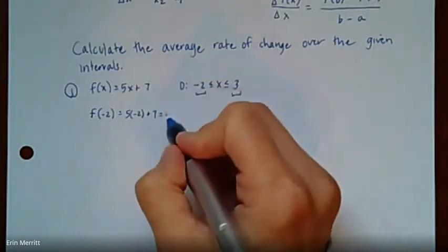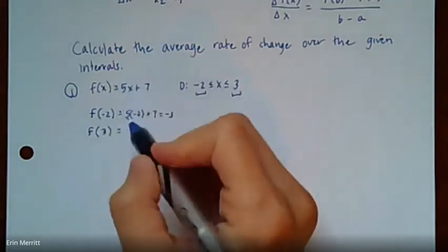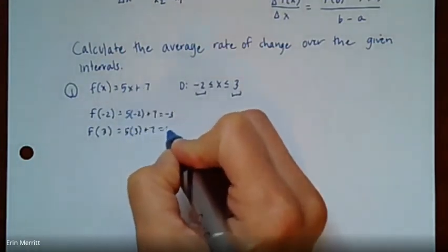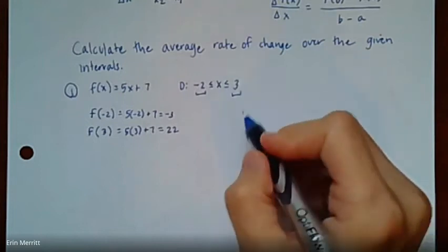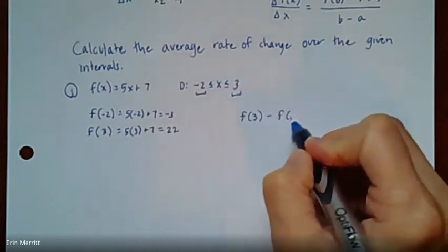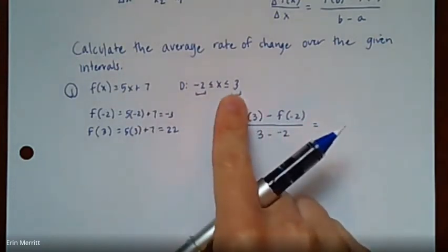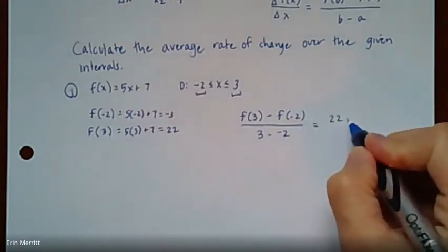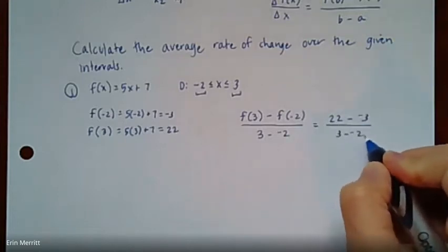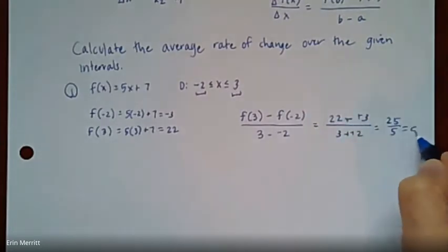I think the easiest thing to do is to quick calculate f of -2 and f of 3 first, and then we'll go from there. So just kind of off to the side here. You can do a little mental math. You could grab your calculator. I don't care which way you do it, but the idea of 5 times -2 and then plus 7, right? That's going to give us -3, because it would be -10 plus 7. If we do f(3), plug in a 3, so 5 times 3 would be 15 plus 7. That's going to give us 22. So to calculate the average rate of change, we would do f(3) minus f(-2), and then all over 3 minus -2. Now the order in which you do them doesn't really matter. So you could have done f(2) minus f(3). Just in the denominator, make sure that it matches.